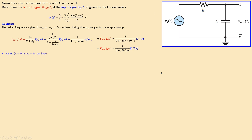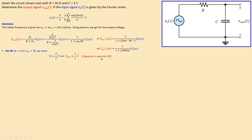For DC analysis, omega = 0 (i.e., 0 radians per second, or 0 Hz), so n = 0 and omega_n = 0. The input is just 1.5 volts. The capacitor acts as an open circuit for DC, giving it infinite impedance. This means the entire input voltage appears at the output, so V_out equals the input: 1.5 volts DC.